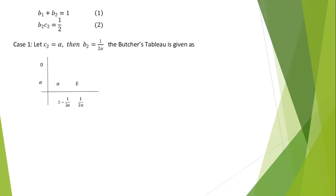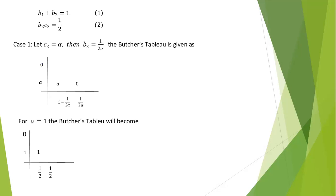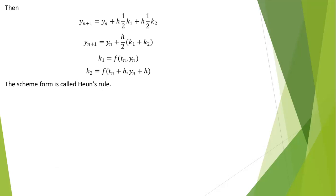The general Butcher tableau for the two-stage scheme uses alpha as a free parameter. When alpha equals 1, the Butcher tableau gives the scheme: y_(n+1) equals y_n plus (h/2)·k₁ plus (h/2)·k₂. Factorizing h/2 gives y_(n+1) equals y_n plus (h/2)(k₁ plus k₂), where k₁ equals f(t_n, y_n) and k₂ equals f(t_n plus h, y_n plus h·k₁). This scheme is called the Heun's rule.